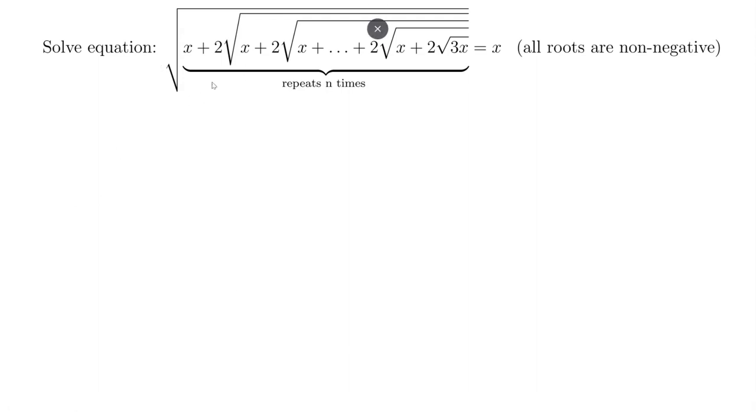We want to solve for square root of x plus 2 times square root of x plus 2 times square root of x, and so forth. The square root repeats n times until we get the innermost is 2 times square root of 3x. And this whole expression equals x. We assume all square roots, all roots here are non-negative.